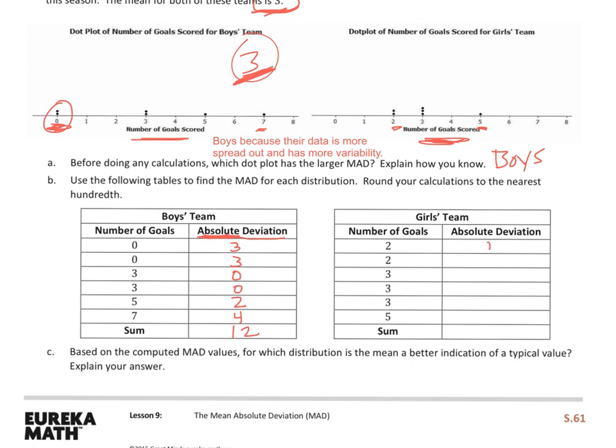Now, the girls, I see that they're 1, 1, because 2 is 1 away from 3. And 3's are right on with the mean, and the 5 is 2 away. So, if I add those up, they only have 4.